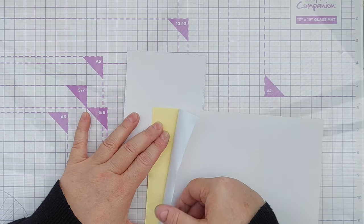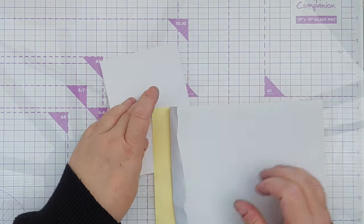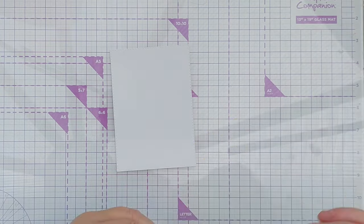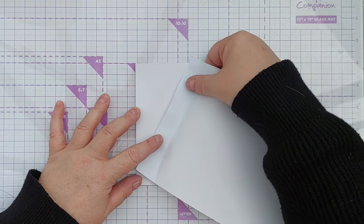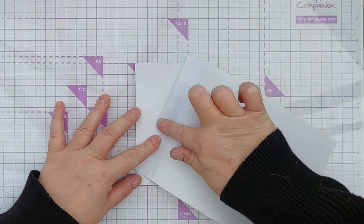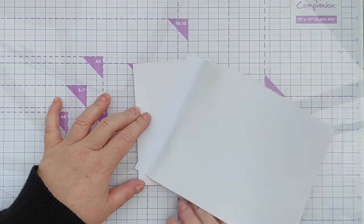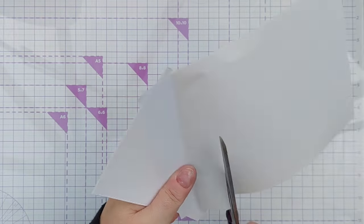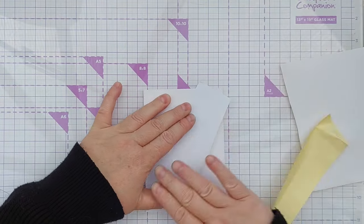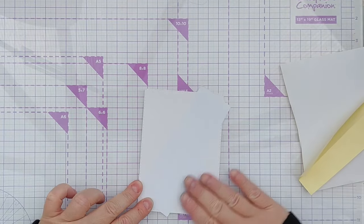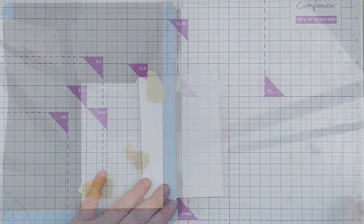Today I want to heat emboss straight onto my panel but I want to mask off an area first that's not going to have any heat embossing on it. I'm going to use masking paper. I'm just going to cut off this bit. I've got my stamp positioner here.